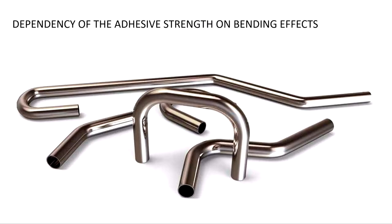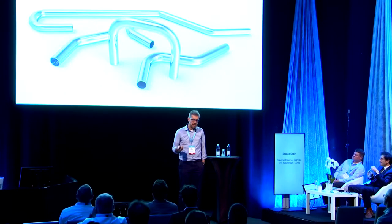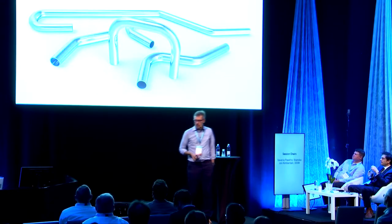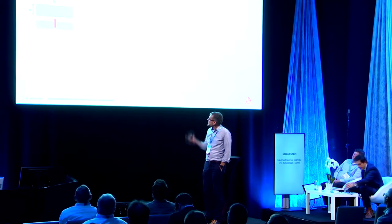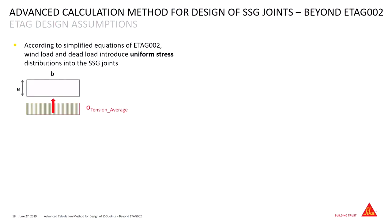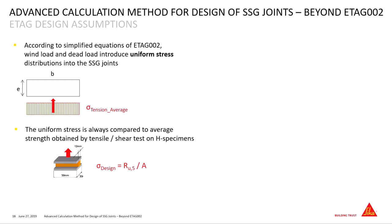Now coming to a second topic — the consideration of bending. Because we are not living in an ideal world. We don't have just tension or uniform stress in the joints. We have also some other things, and therefore we have to consider this one as well. The standard itself gives a good idea how to handle uniform stress in the joint — you can use this H-specimen and calculate out of this one your design values. This works quite well. But the reality is that in more and more cases, we have bending acting on the joints as well.